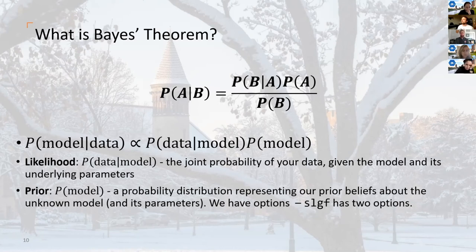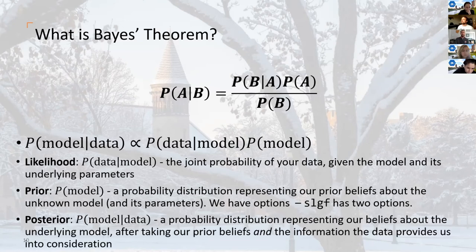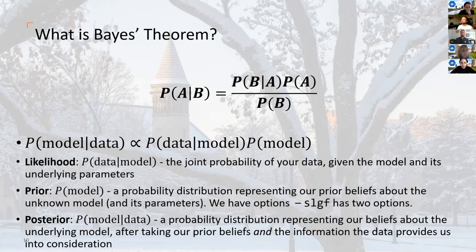There are three main mathematical components. First, the likelihood function — the joint probability of your data given the model and its underlying parameters. Second, the prior distribution — representing your prior beliefs about the unknown model; SLGF gives you two options for specifying priors. Third, the posterior distribution — you take your prior beliefs, incorporate the information your data provides about the actual trends, combine them, and get your posterior belief about the model. When the data is incompatible with your prior beliefs, the likelihood updates and gives you a posterior more indicative of the truth.